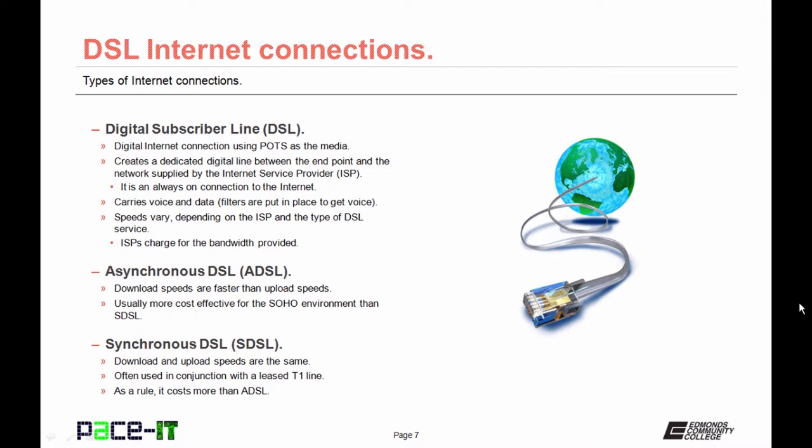DSL creates a dedicated digital line between the endpoint and the network supplied by the internet service provider, the ISP. It's an always-on type of internet connection. DSL carries both voice and data; filters are put in place so that you can get a clear voice channel. The speed of the DSL connection varies depending upon the ISP and the type of DSL service that you're paying for. As a rule, ISPs do charge for the amount of bandwidth that they provide to the premise.